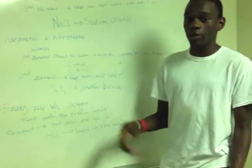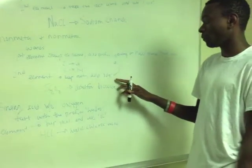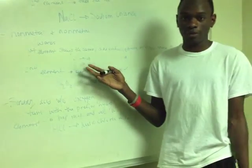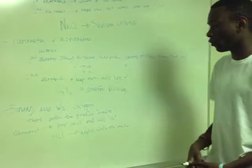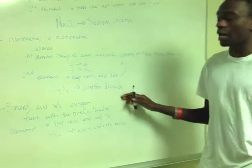For the second element, you keep the root word and add the suffix 'ide'. You also add a prefix depending on how many there are. 'Di' if it's two and 'tri' if it's three. For example, S2O2 would be disulfur dioxide.